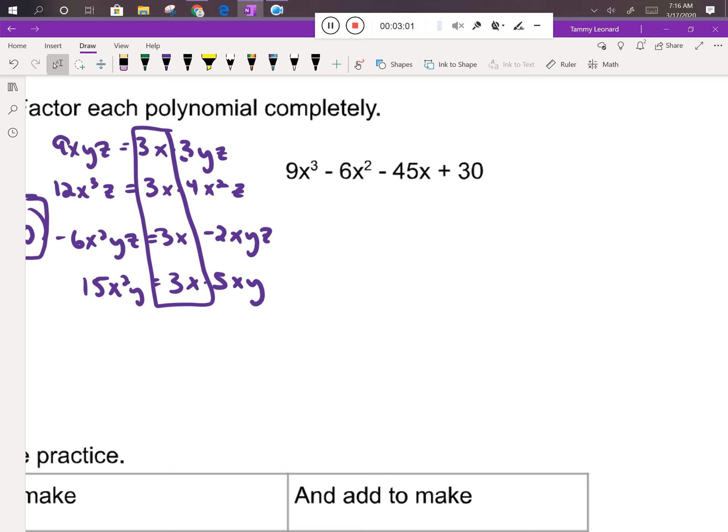Now this next one, I notice again that they have a 3 in common. So let's take a 3 out of everything, and this is going to be one of those problems where we use the big bracket. So we're going to have 3[x³ - 2x² - 15x + 10]. And then we can do the grouping, remembering that the negative sign goes with that term and I need a plus sign in between.